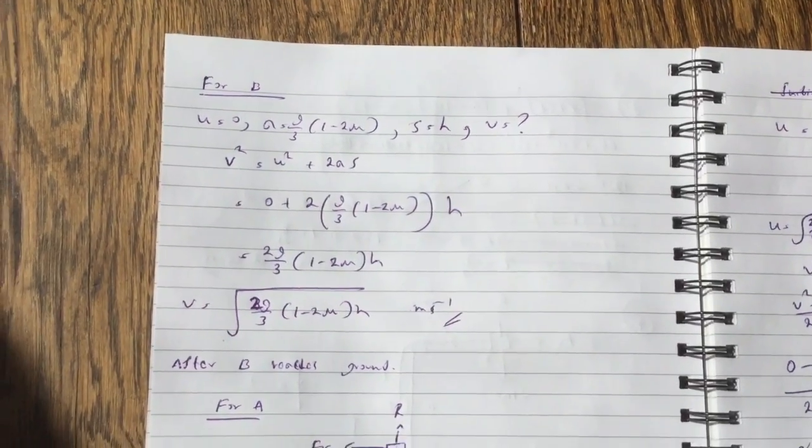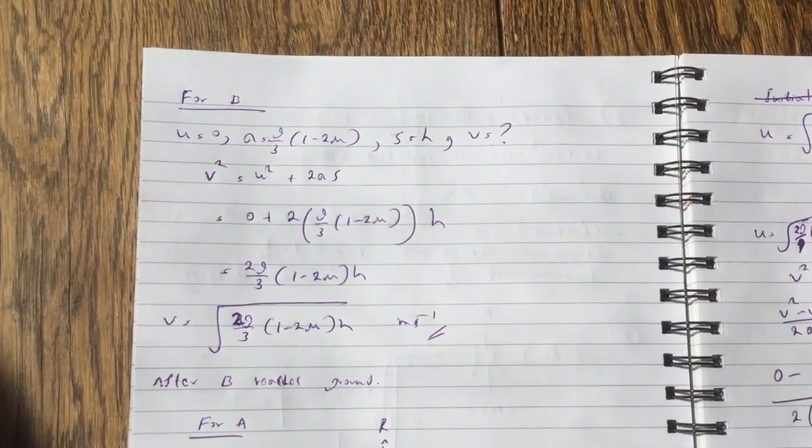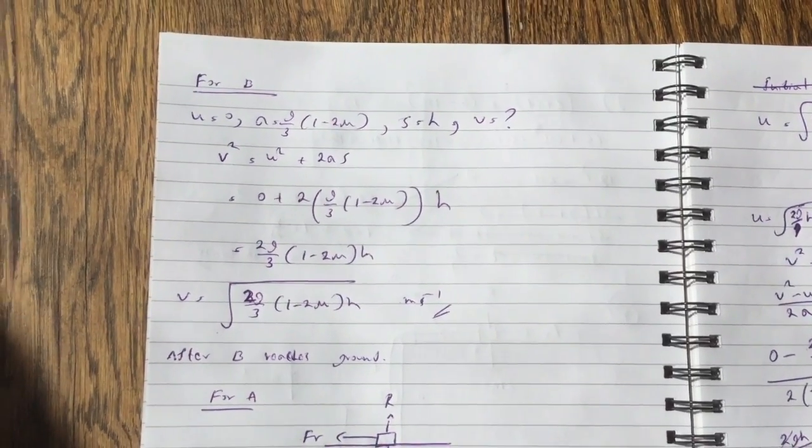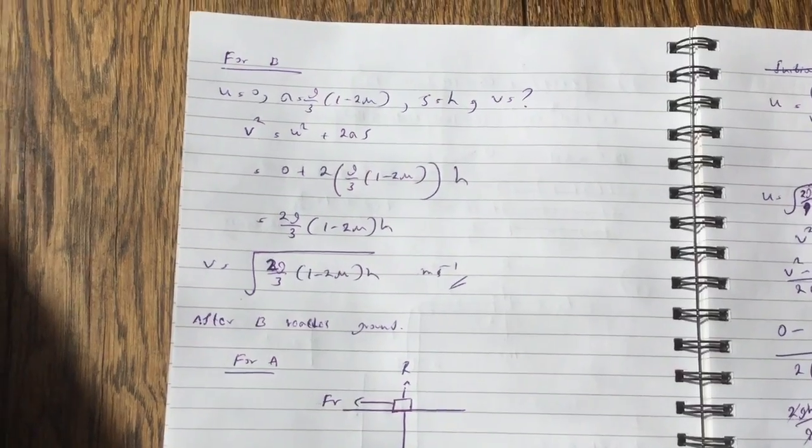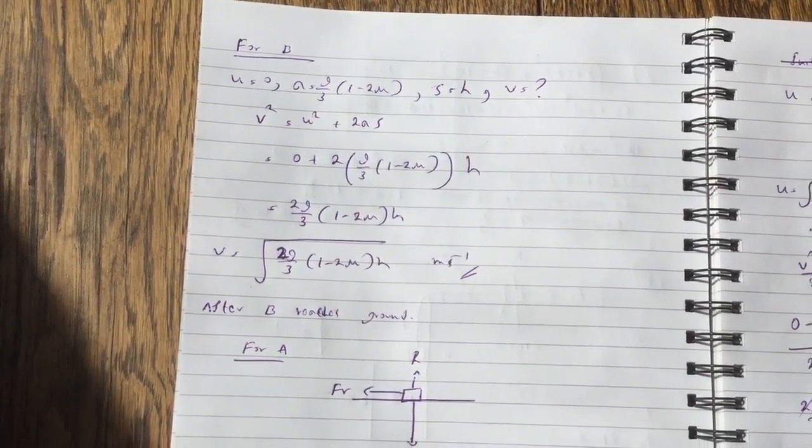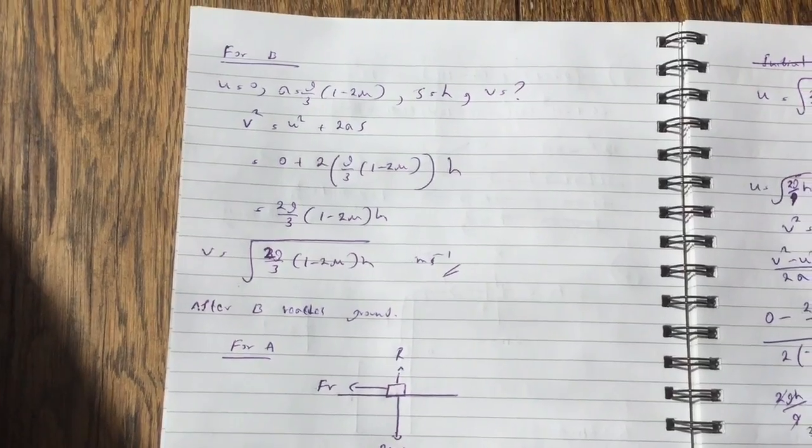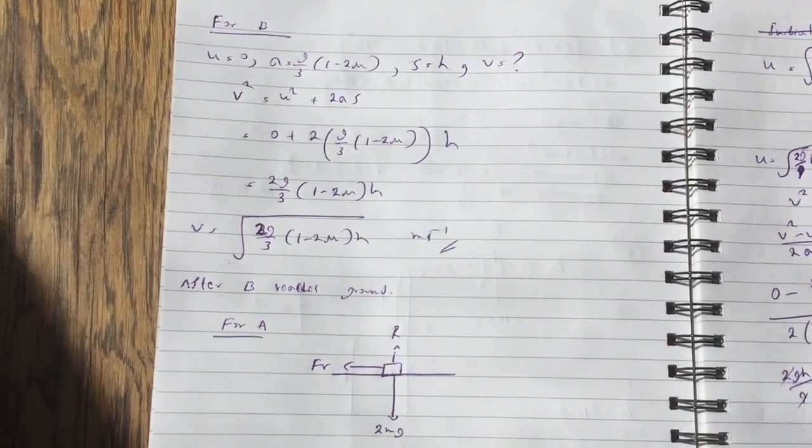So now for B, from initial rest, acceleration is what we just worked out. Distance is h. The final velocity works out to be square root of 2g over 3, 1 minus 2mu times h meters per second.